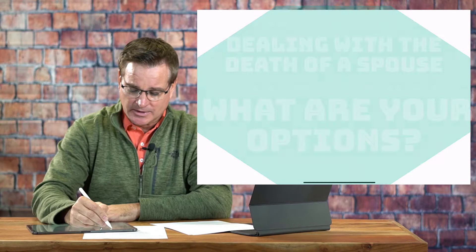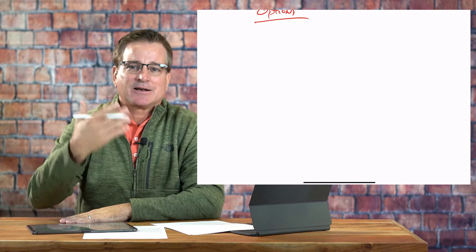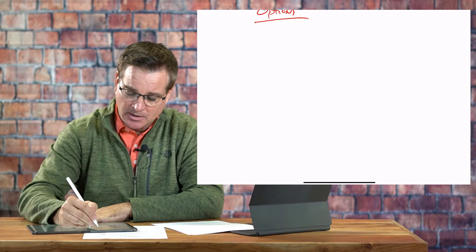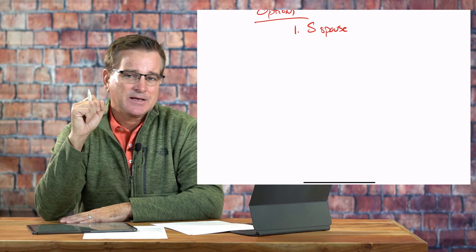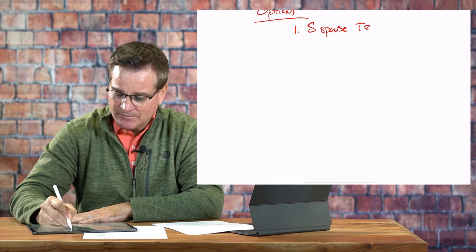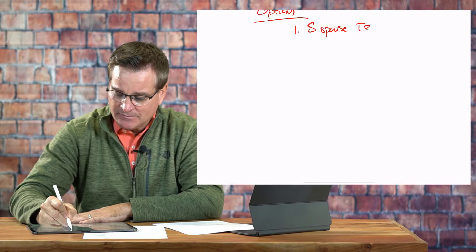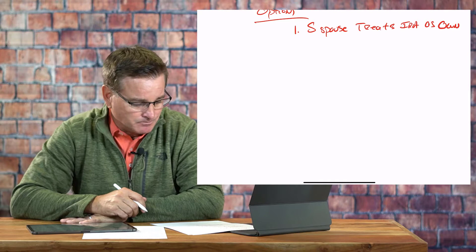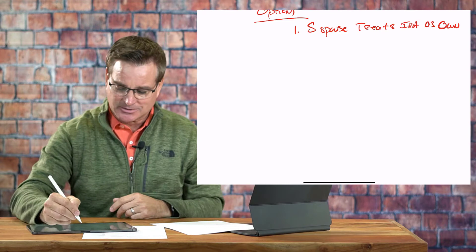What are some options for this surviving spouse? The most popular — based on my personal experience working with folks — is number one: the surviving spouse can treat the deceased IRA as their own. That is a very popular strategy and we talk about it in two different ways.